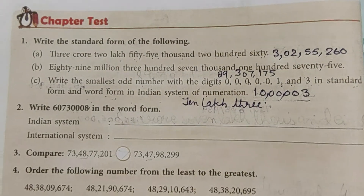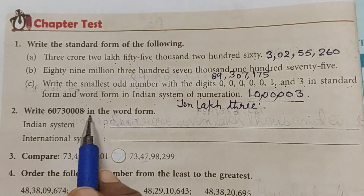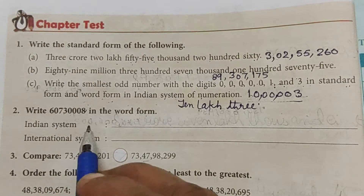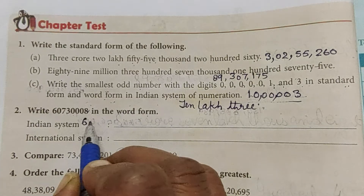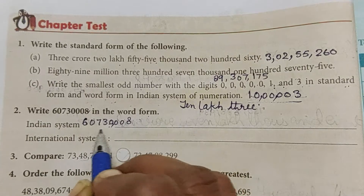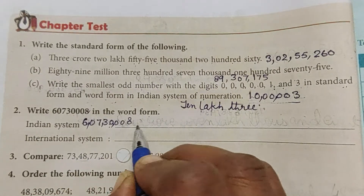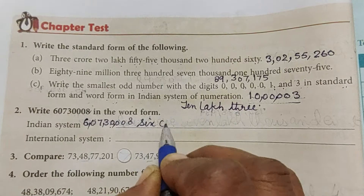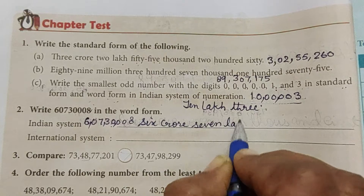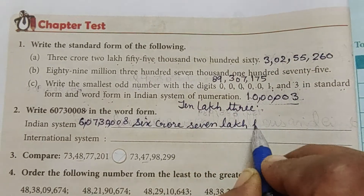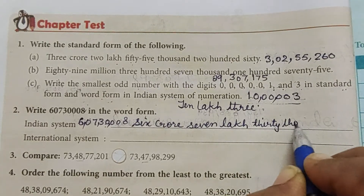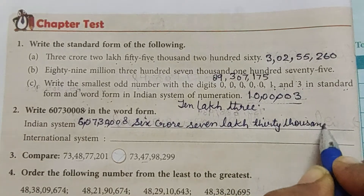Now write this number in word form in the Indian system. First we put the commas: 6, 0, 7, 3, 0, 0, 0, 8 — so the number is six crore seven lakh thirty thousand eight.